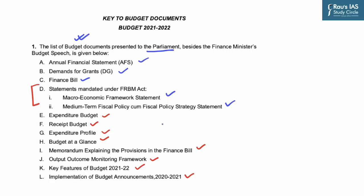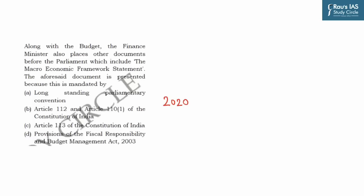Other budget documents include: Expenditure Budget, Receipt Budget, Expenditure Profile, Budget at a Glance, Memorandum Explaining Provisions in the Finance Bill, Output Outcome Monitoring Framework, Key Features of Budget 2021-22, and Implementation of Budget Announcement for 2020-21. In UPSC Prelims, a question was asked: along with the budget, the Finance Minister also places the Macroeconomic Framework Statement before Parliament. This document is presented because it is mandated by the Fiscal Responsibility and Budget Management Act of 2003.